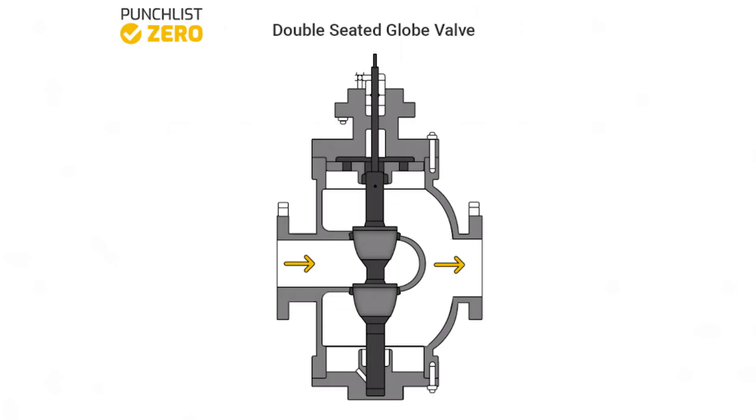The typical globe valve design consists of a single seat with a disc that moves in and out of the flow path. A double seated design with two plugs also exists. This two-plug design cuts the hydraulic load on each disc in half.